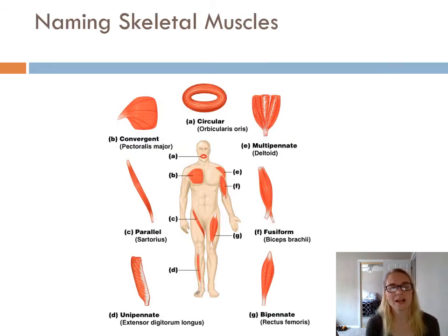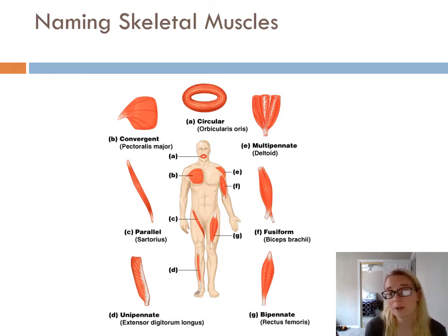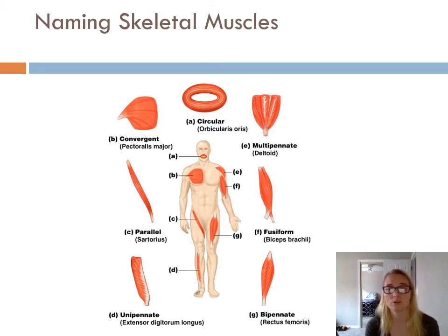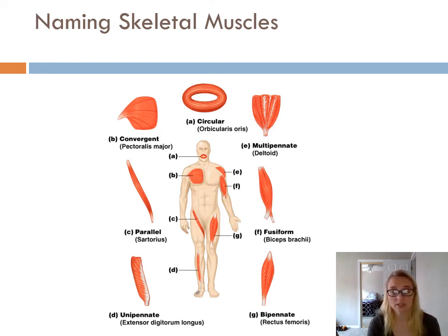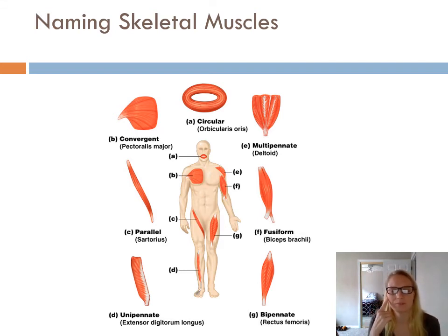This last slide isn't asking you to memorize all of these terms — it's more of a reference that gives you reasons why muscles are named the way they are. A lot of times muscles are named based on their shape. For example, you have your orbicularis oculi and orbicularis oris — orbicularis meaning circular. The sartorius has muscle fibers that all run parallel.